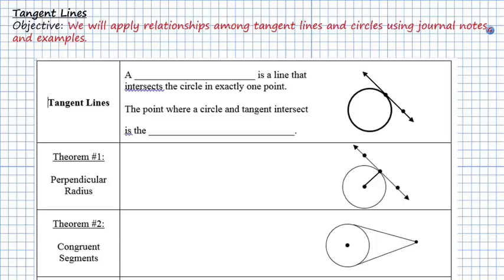Before we get started, your journal notes page is actually going to be a cutout today. You should have picked up two pages or two pieces of paper — one that has a whole bunch of theorems on it, the other one that has some examples on it. So your theorems page, you're going to want to cut out around the lines, and then go ahead and tape it into the left hand side of your journal.